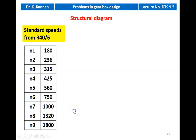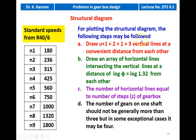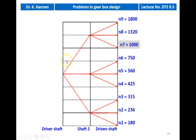Next, we draw the structural diagram. To draw the structural diagram, we take the following steps: draw U+1, that is 2+1 equal to 3 vertical lines at convenient distances from each other, where U is the number of stages — this is a 2-stage gearbox. Draw an array of horizontal lines intersecting the vertical lines at a distance of log φ equal to log 1.32 from each other. The number of horizontal lines equals the number of steps Z, so here we draw 9 horizontal lines. The number of gears on one shaft should generally not be more than 3, but in some exceptional cases it may be 4.